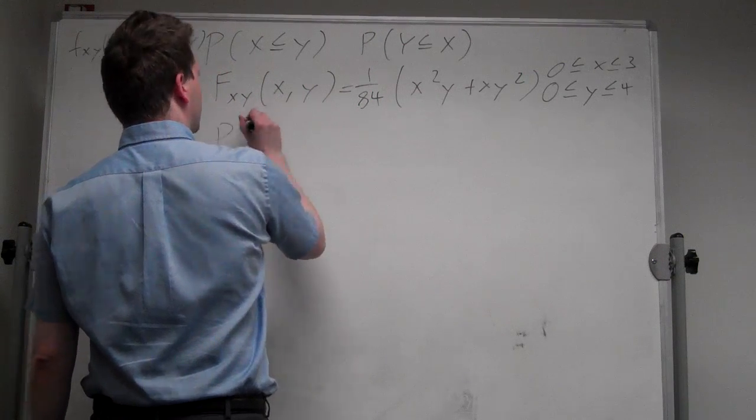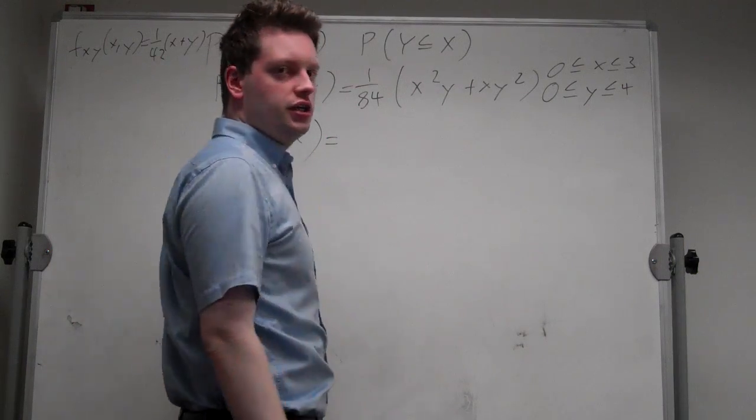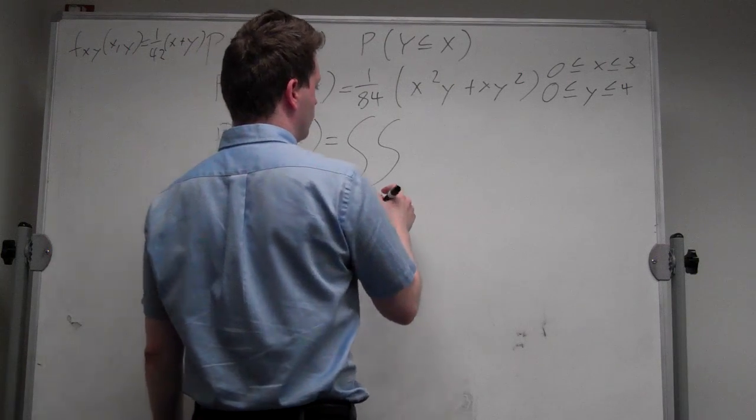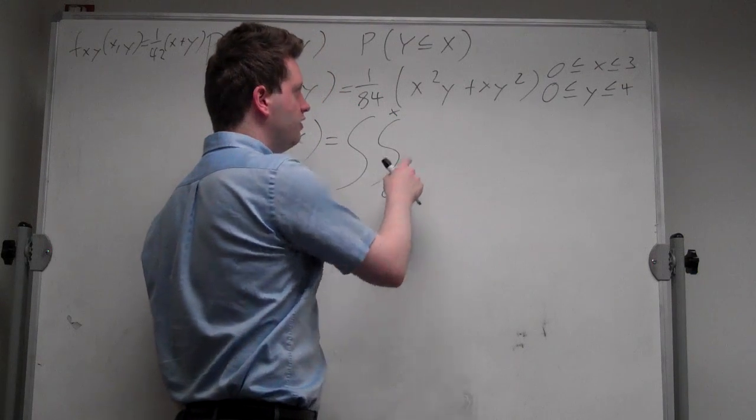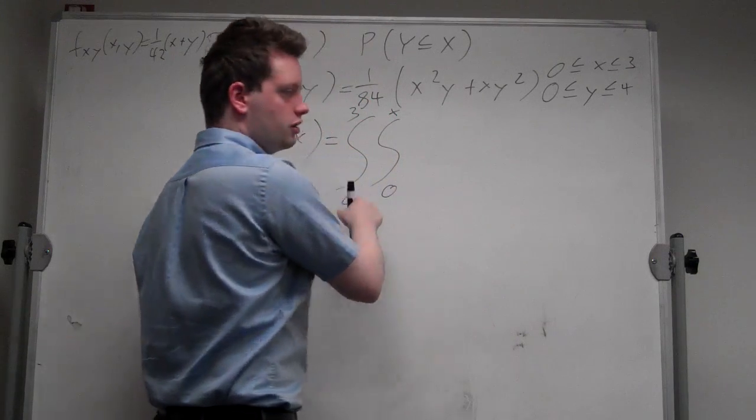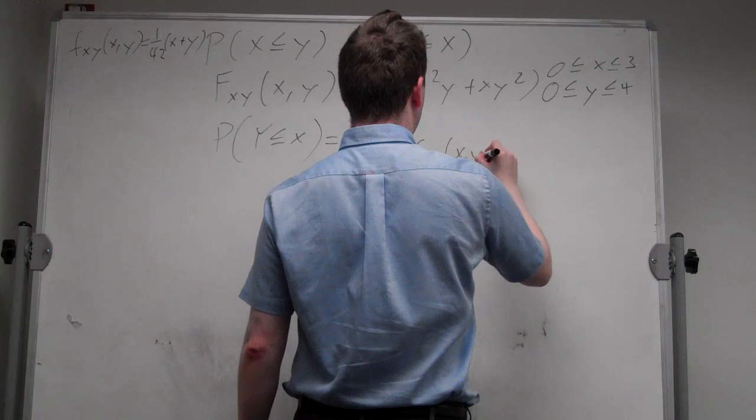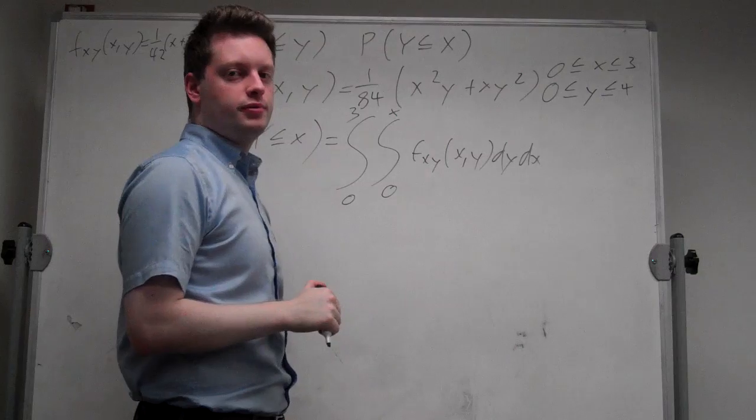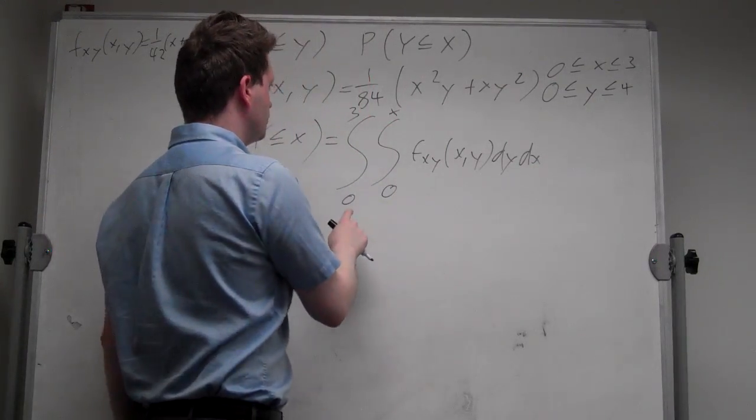The probability of y less than or equal to x is simply integrating twice, once first from 0 to x, because y can take any value from 0 up to x, and the other one is from 0 to 3 of f(x,y), first dy and then dx. So first integrate with respect to y, because it can take values from 0 to x, and then with respect to x, which can take values from 0 to 3.